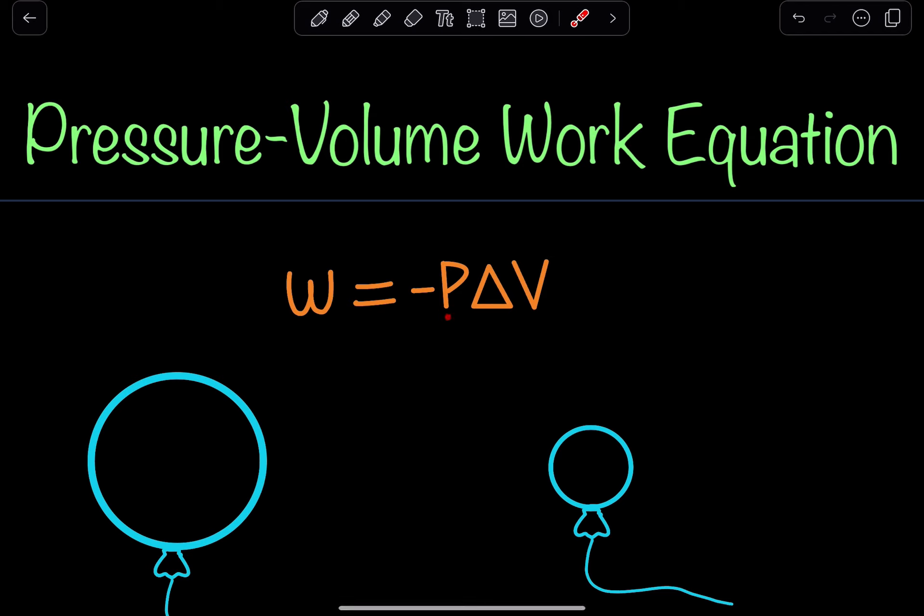Now, this negative sign does not indicate that pressure is negative. Because if you think about it, how can pressure be negative? It cannot. Pressure is always a positive value. It's either exerted at a high pressure or it's exerted at a low pressure. But pressure itself cannot be negative. This negative is simply a part of the overall formula.